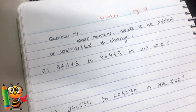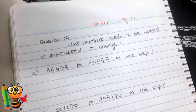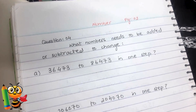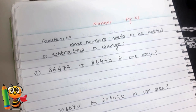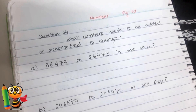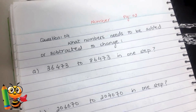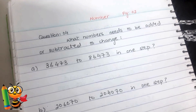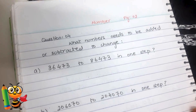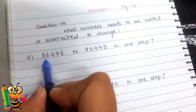Question number four asks: what number needs to be added or subtracted to change one number to another? They give us the choices — either it needs to be added or it needs to be subtracted. Look at part one.